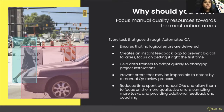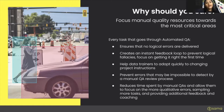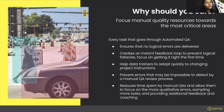AutoQA also helps data trainers adapt quickly to changing project instructions. Imagine a new rule is introduced mid-project: omit any cars that are less than 20 by 20 pixels. AutoQA can kick in and give annotators an error if they annotate objects smaller than 20 by 20, helping them adapt to that new instruction. Similarly, it prevents errors that are sometimes impossible for a manual quality process to detect — imagine a manual quality analyst having to individually measure each car to check if it's bigger than 20 by 20 pixels. That would be time-consuming and frustrating, so AutoQA handles it in an automated way.